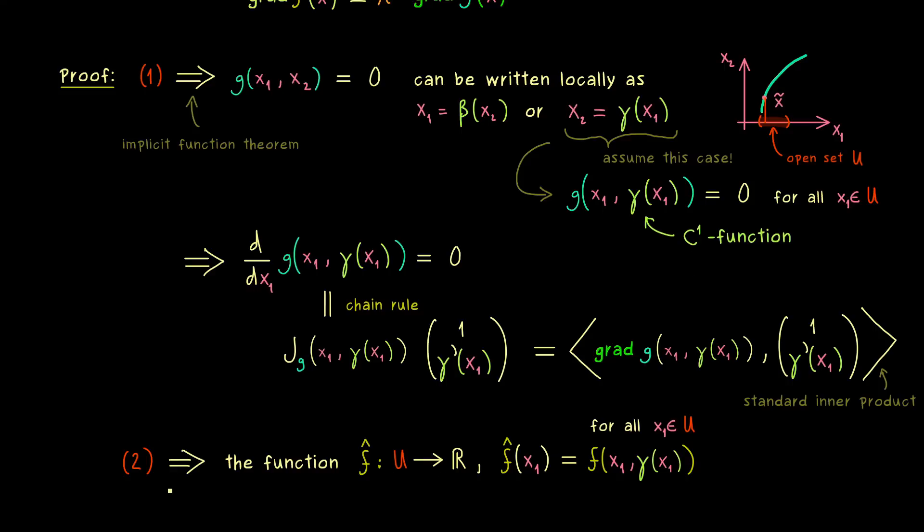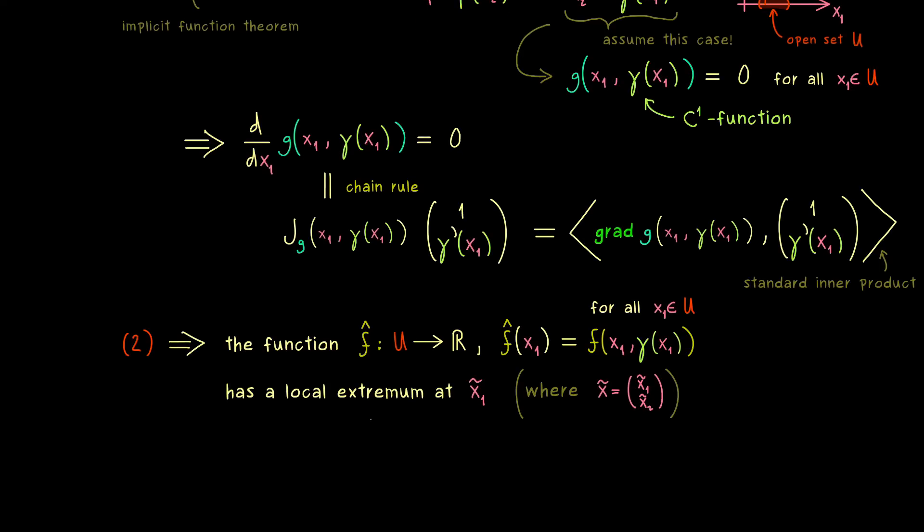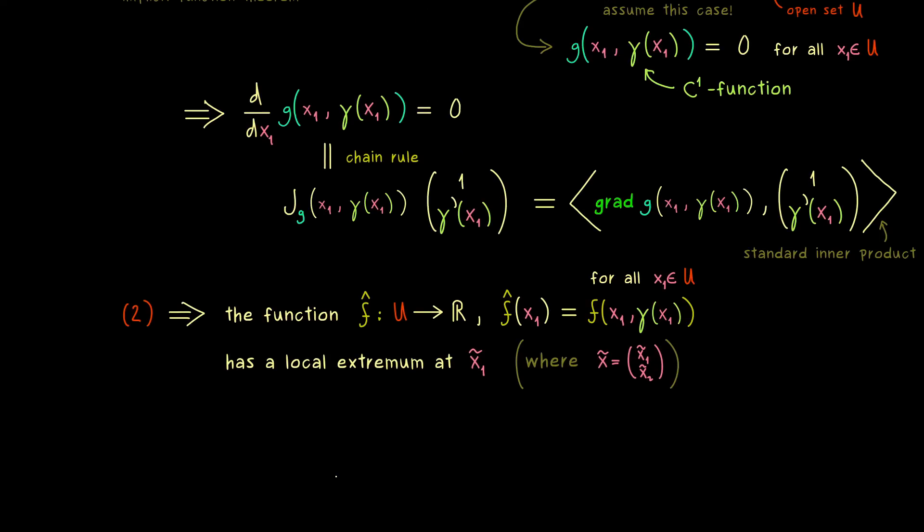However now the condition 2 tells us that this function has a local extremum at x̃. Or more precisely it has a local extremum at x₁̃, where x₁̃ is the first component of x̃. So this is the next conclusion we have here. We have a one-dimensional function which has a local extremum at a given point. And there we can use our knowledge of the necessary condition for local extrema.